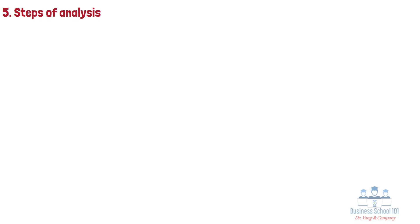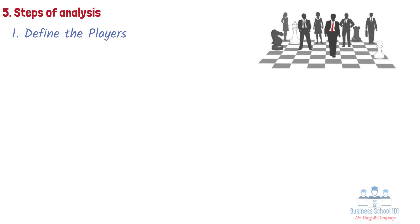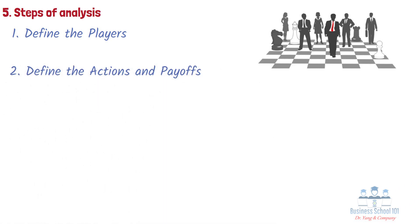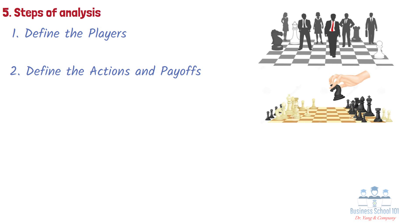The basic steps involved in using game theory to analyze a scenario are as follows. First, define the players involved in the scenario — this could be individuals, groups, firms, or countries, depending on the context. Second, define the actions and payoffs: define the actions that each player can take and the resulting payoffs for each possible outcome. These payoffs represent the benefits or costs associated with each possible action for each player.